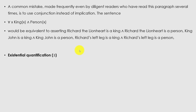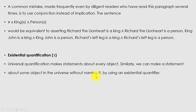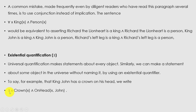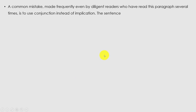The second quantifier is existential quantification. Universal quantification makes a statement about every object; similarly we can make a statement about some object in the universe without naming it by using the existential quantifier ∃. To say that King John has a crown on his head, we write: ∃x Crown(x) ∧ OnHead(x, John). The existential quantifier ∃x is pronounced 'there exists an x such that' or 'for some x.'